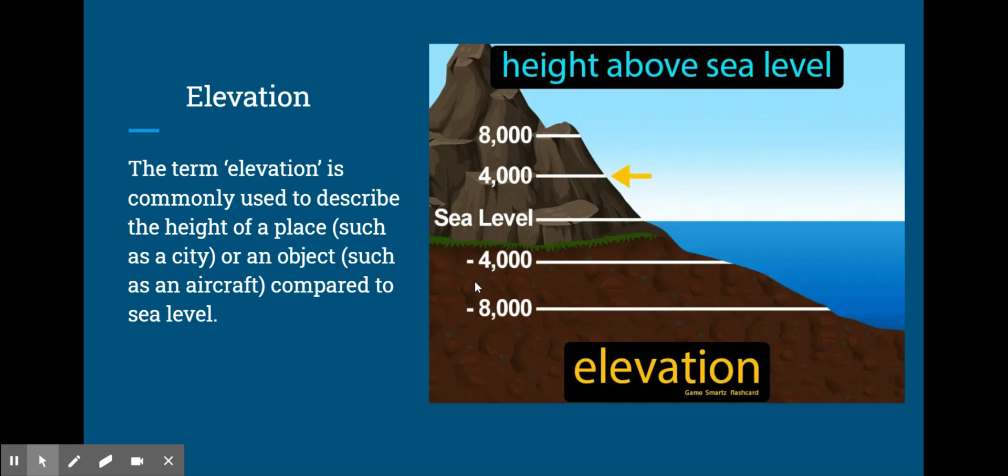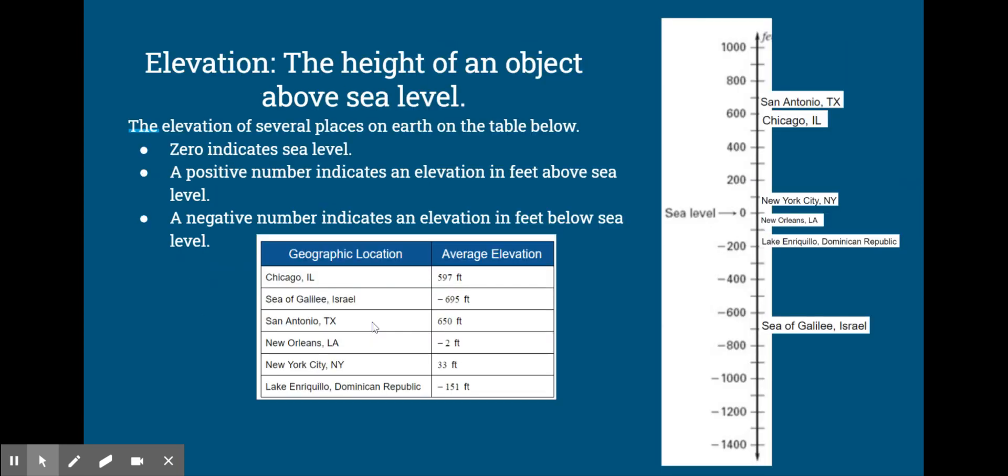Zero indicates sea level. A positive number indicates an elevation in feet above sea level, and a negative number indicates an elevation in feet below sea level. Let's look at an example. The elevation of several places on earth are given on the table below.